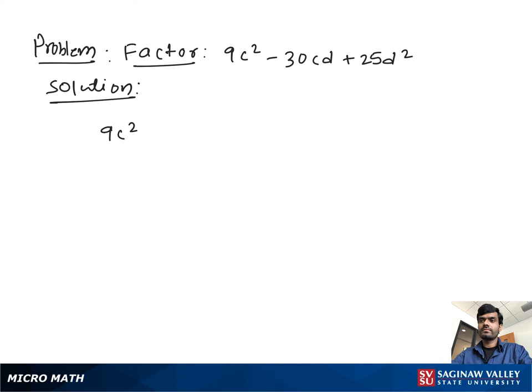Factor 9c² minus 30cd plus 25d². If we see the first and last term, it looks like perfect squares, so you can write the first term as (3c)² and the last term as (5d)².